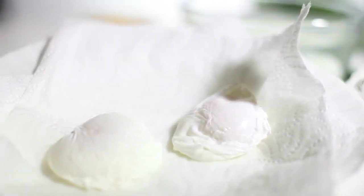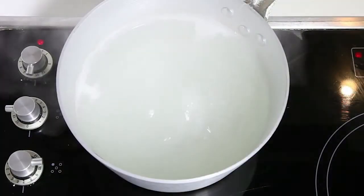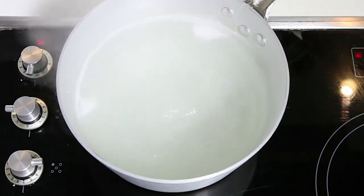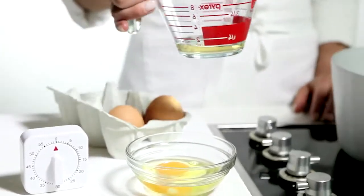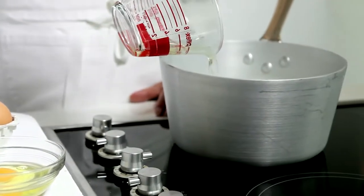To make poached eggs for salads and breakfasts, fill a wide saucepan with water and bring to a gentle simmer. Then add one to two tablespoons of vinegar. This will help set the white.